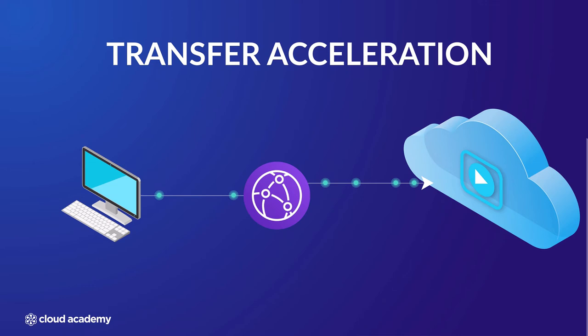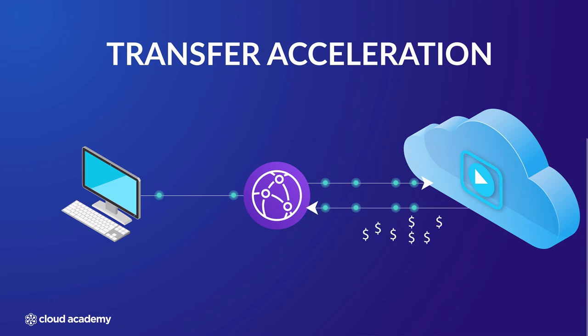When using Transfer Acceleration, you should be aware that there is a cost. Whereas normal data transfer into Amazon S3 is free from the internet, with Transfer Acceleration there is a cost associated per gigabyte depending on which edge location is used. There is also an increased cost for any data transferred out of S3, either to the internet or to another region, again due to the edge location acceleration involved.